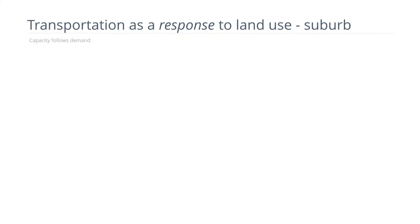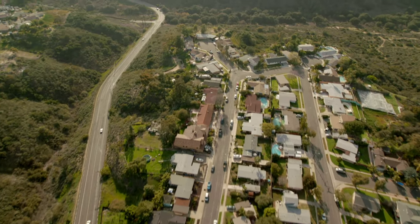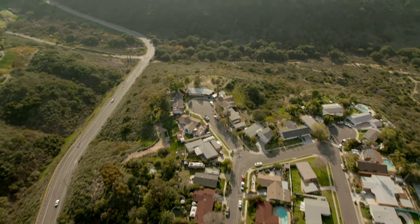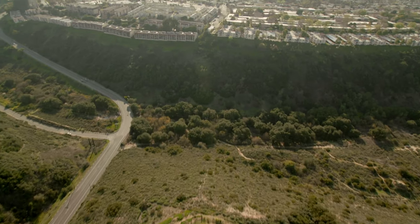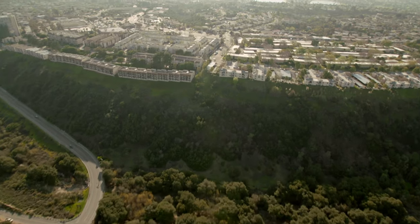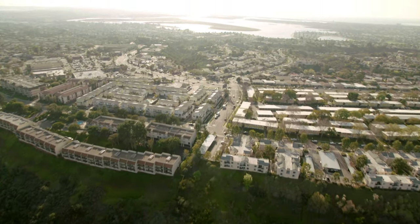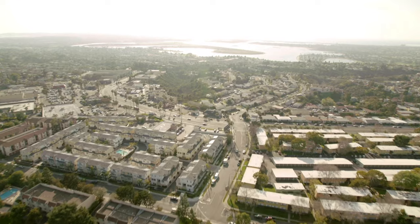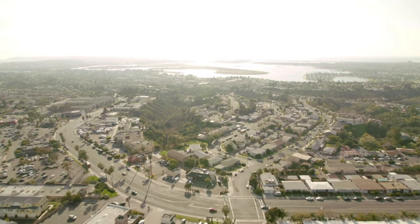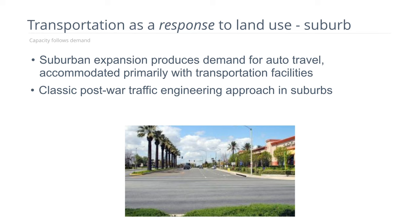Now let's discuss the evolution of land use and transportation systems in more detail. I want to make four distinctions of how we can look at this. The first perspective is that transportation is a response to land use in a suburban context — the idea that transportation capacity follows demand, that suburban expansion produces a demand for travel which is accommodated with transportation facilities. This is the classic post-war engineering approach to serving the suburbs with highway capacity.